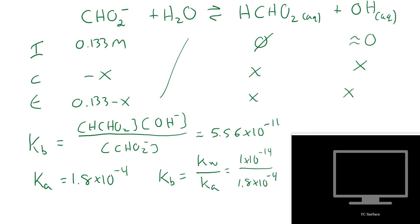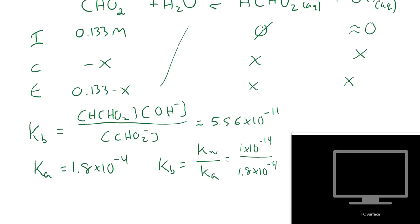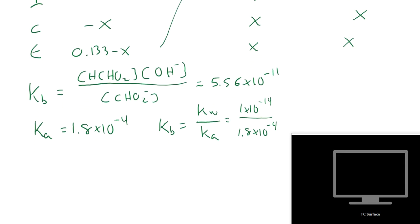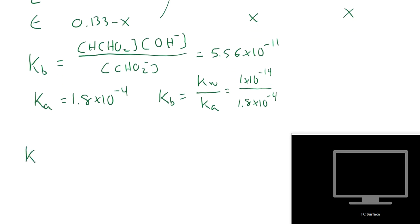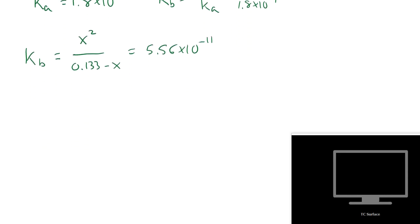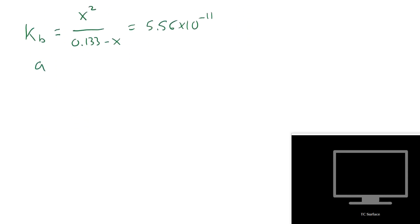Now we can use our ice tables to substitute in values into our Kb expression. And I'm going to try to do that right here. So we've got Kb. Both our formic acid and our hydroxide were just x. And our formate ion was just 0.133 minus x. And again, that's 5.56 times 10 to the minus 11th. Well, we can solve this using the quadratic equation. Or we look at there. We say, hey, we've got a concentration of 0.1. We've got a K of 10 to the minus 11th. That's a good candidate for the small x assumption.